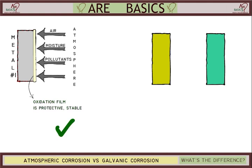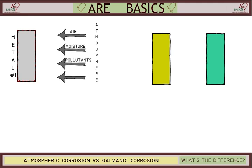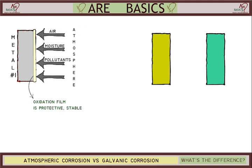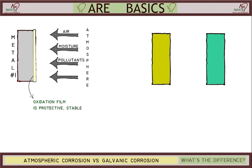For example, metals like aluminum react with oxygen in the air to form a thin oxidation layer. This oxidation layer is stable and protects the metal beneath from further oxidation, thus protecting it.